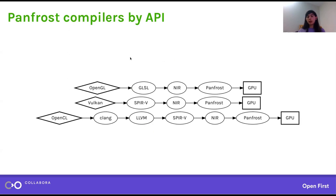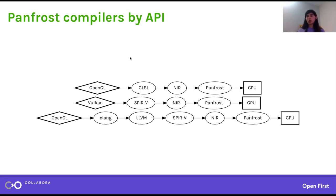For PanFrost — the main driver I work on — it has a few different code paths depending on what API it's using. For OpenGL you have the simplest code path. For Vulkan, same thing. You have your GLSL or your SPIR-V, there is common Mesa code to translate SPIR-V into NIR, and the only code my team has to write is a compiler to go from NIR code into the Mali hardware. That's doing something still substantial, but all the GLSL compiling and common NIR optimizations we get essentially for free. It's a nice win for open source.